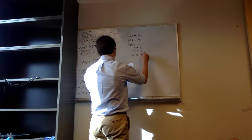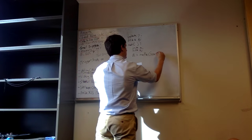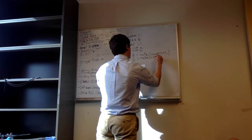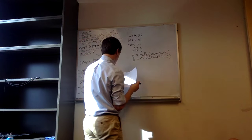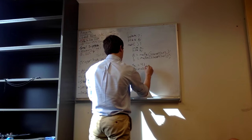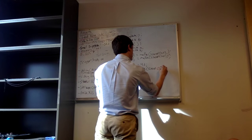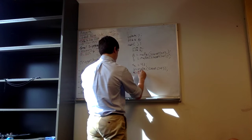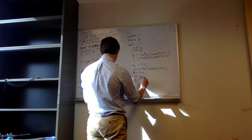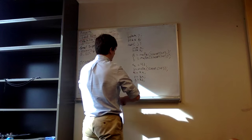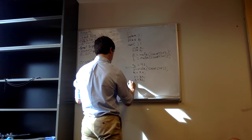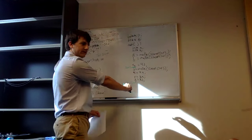Then we set star A to 42. Then we malloc more memory and put it in B. Then we do star B equals star A. Then P equals the address of A, Q equals the address of B. We want to draw all the circle-box diagrams for point one and point two in this code.